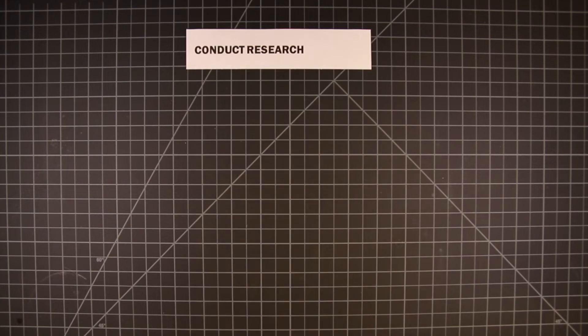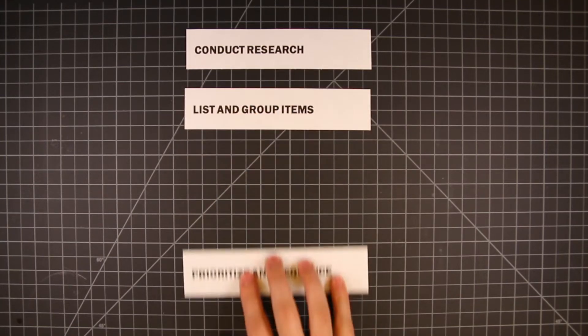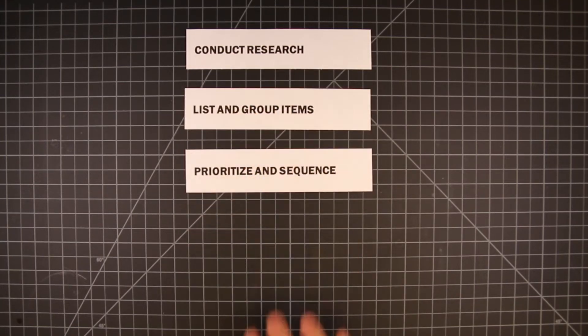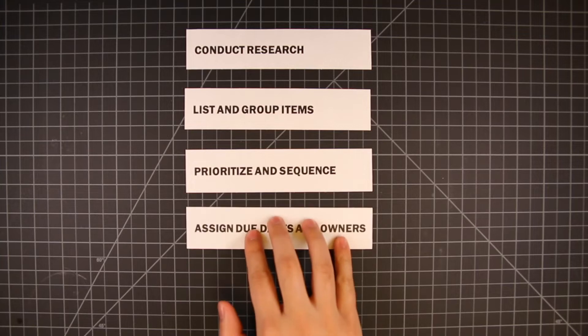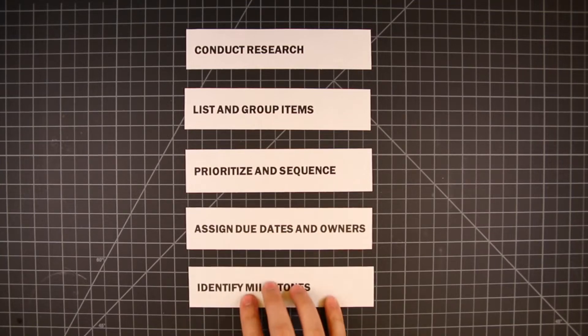At a high level we use five steps: conduct research, list and group items, prioritize and sequence, assign dates and owners, and finally identify milestones.